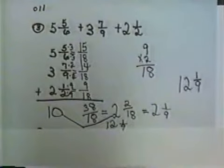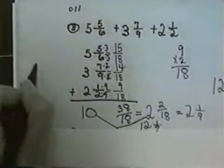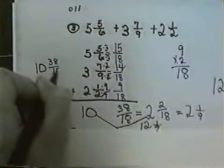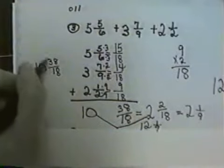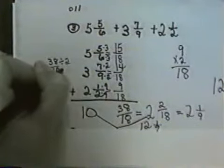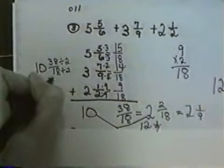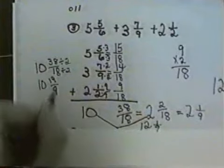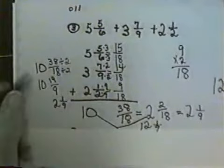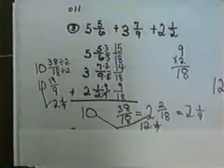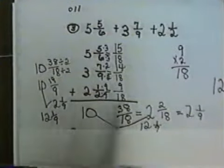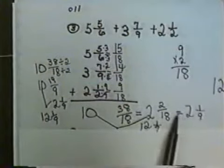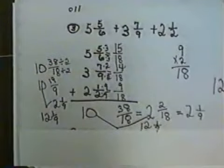Now another thing I could have done would have been when I got the 38 eighteenths here, I could have gone ahead and reduced that. When I came up with 10 and 38 eighteenths, I could have reduced each of these by 2. I would have had 10 and 19 ninths, then divided that out. 19 ninths divides into 2 wholes and 1 ninth. So what I would have needed to do then was to have put my 10 and 2 together, and I would have had 12 and 1 ninth.